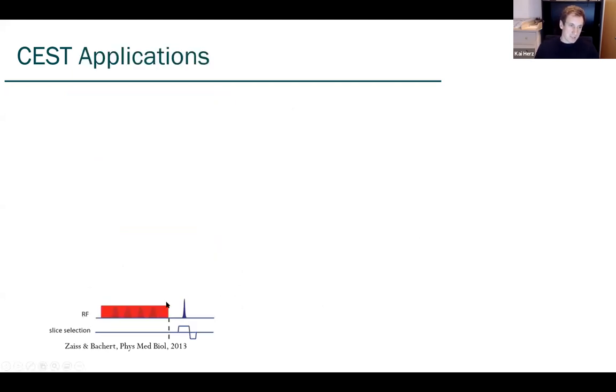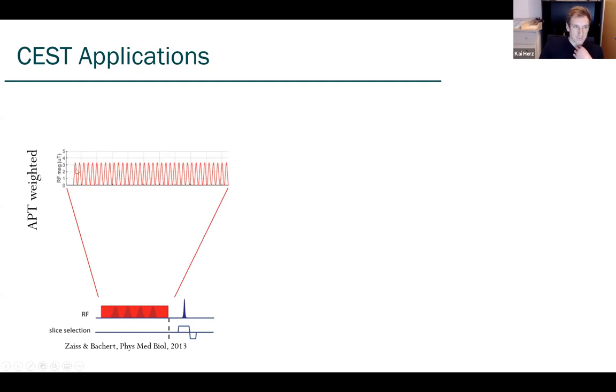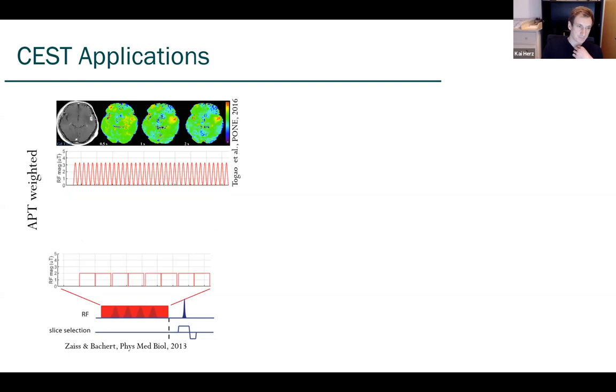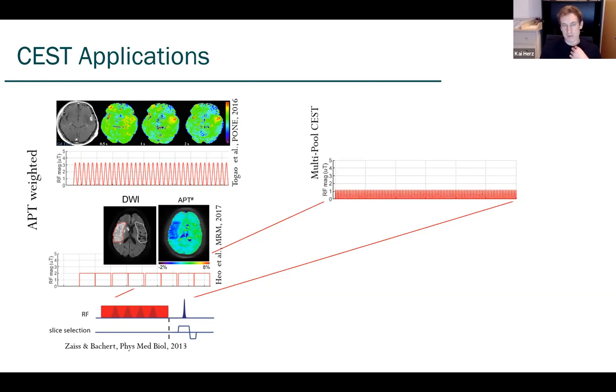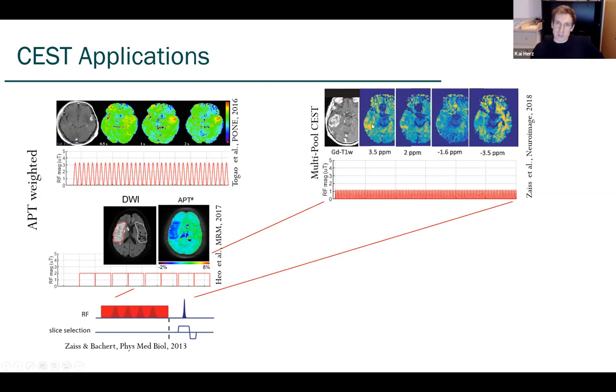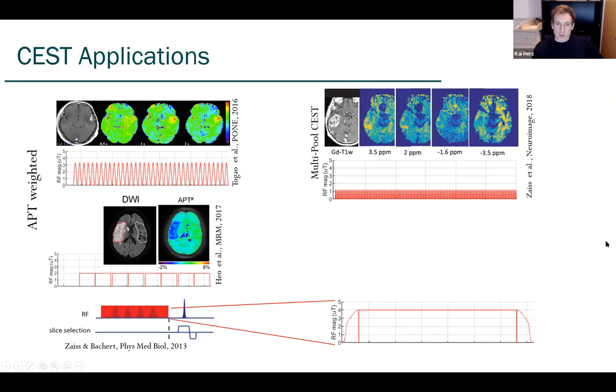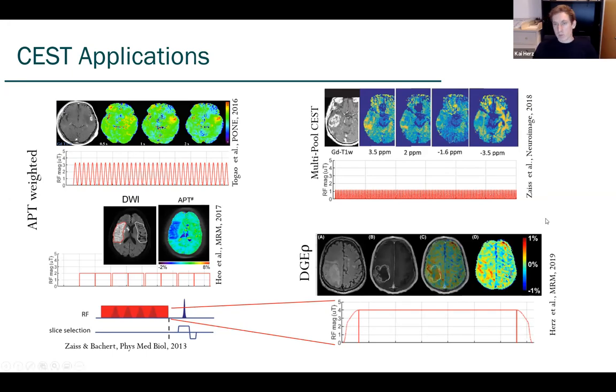So how does such a CEST preparation look in detail? It actually pretty much depends on what you're interested in. One of the most prominent CEST applications is the APT-weighted imaging. They usually have shaped pulses in the range of mean amplitude of two microtesla, for instance used for tumor applications. Then the same power range, two microtesla, but block pulses were used for stroke applications. If you want to tackle more pools selectively, you usually go for lower power. And if you go for higher power, that's what you usually do when you want to tackle faster exchanging pools, like the Spiller protocol for dynamic glucose-enhanced experiments.